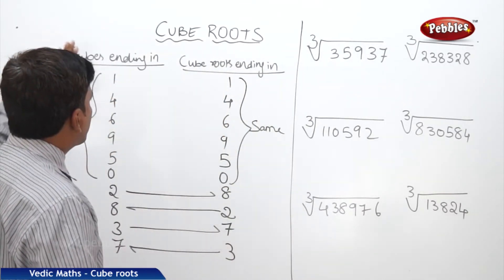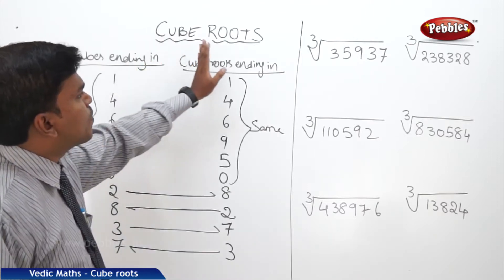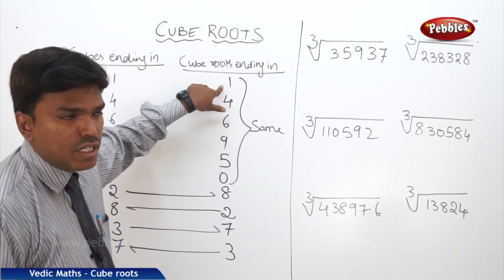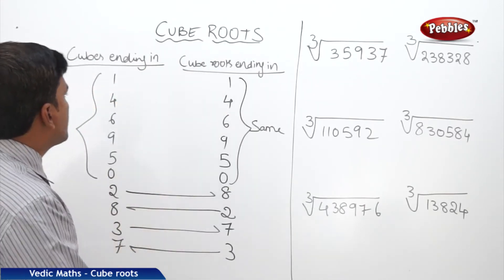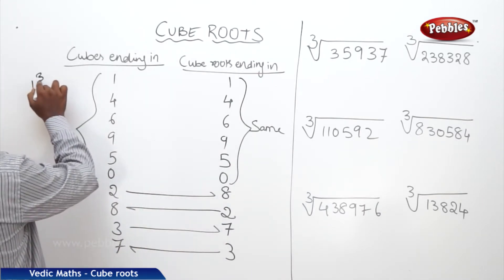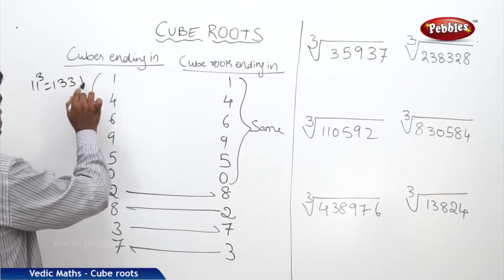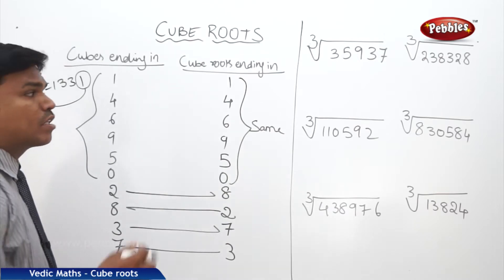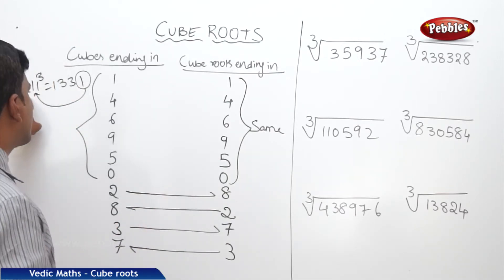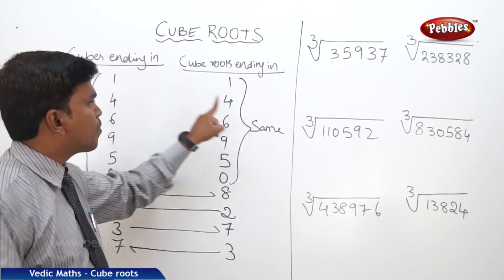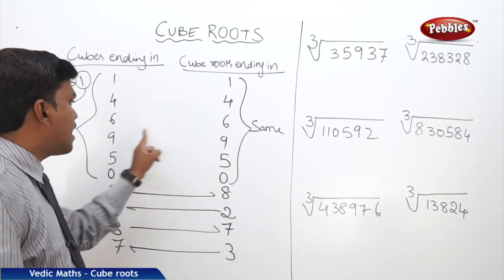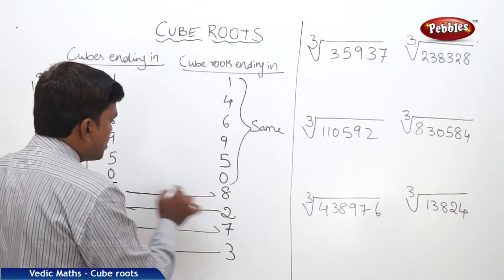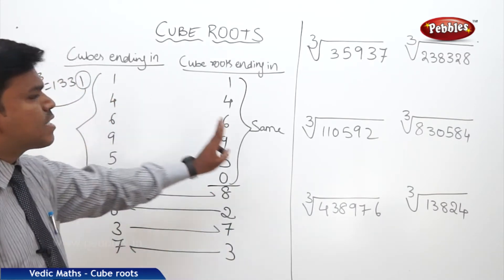Let's discuss the table. If a cube number is ending in 1, its cube root should end in 1 only. For example, 11 cubed is 1331 — a cube number ending in 1, so its cube root also ends in 1. Similarly: if ending in 4, cube root ends in 4; 6 gives 6; 9 gives 9; 5 gives 5; 0 gives 0. For all these digits — 1, 4, 6, 5, 9, 0 — the cube root ends in the same digit.